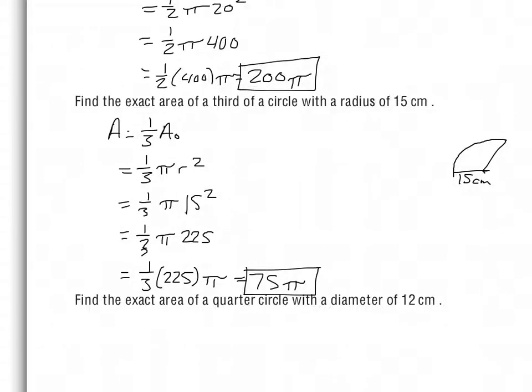Here we see we have one-third of the area of a circle. One-third times π times r squared is our expression. Our radius is 15, so 15 squared is 225. One-third times 225 gives 75π. Remember, multiplying by one-third is the same as dividing by 3 — you can put it as top times top and bottom times bottom and you'll get the same result.